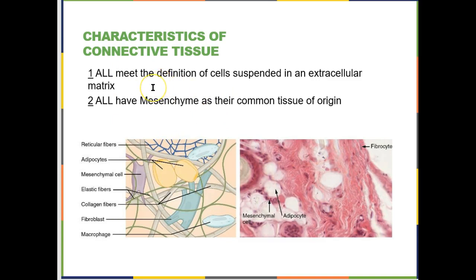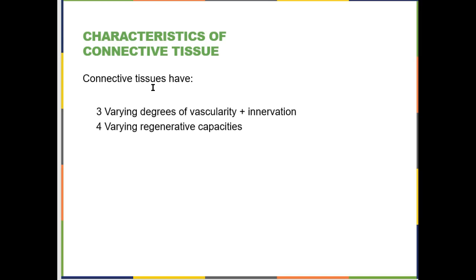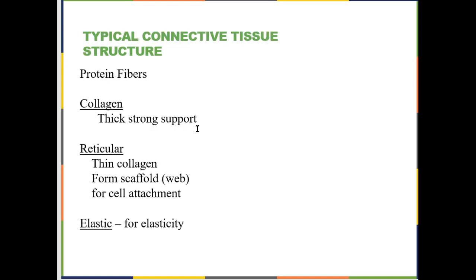This common embryonic origin — mesenchyme — is why it is biologically accurate to classify bone and blood in the same tissue category. Connective tissues have varying degrees of vascularity and innervation. Some can regenerate, like adipose tissue and areolar connective tissue. Some don't regenerate very well at all — if you've ever damaged a tendon or ligament, or cartilage in your knee, you know those don't heal or regenerate very well.